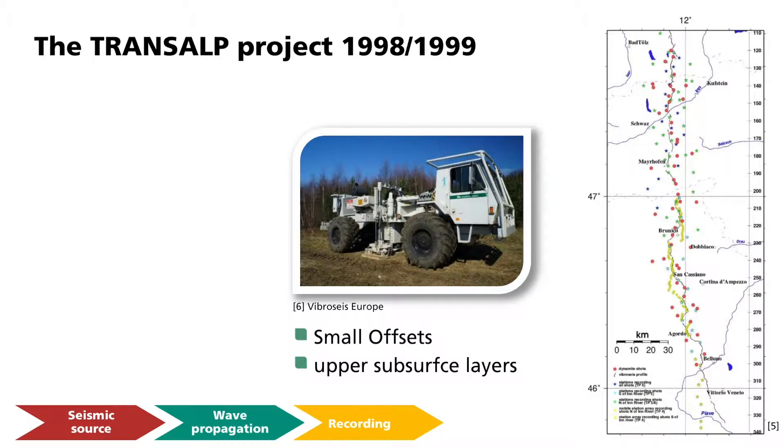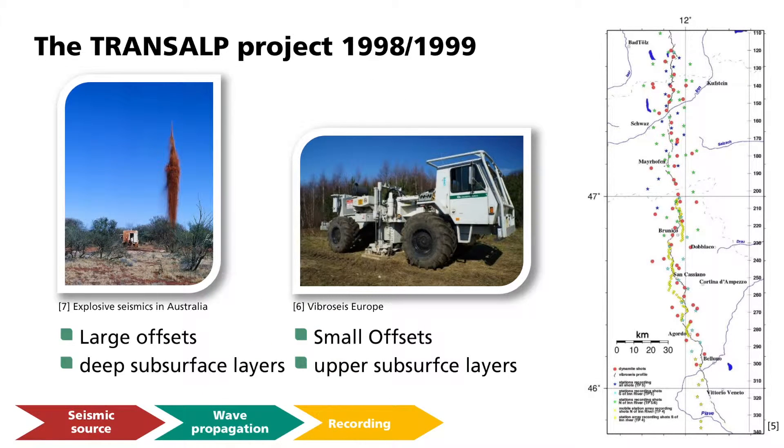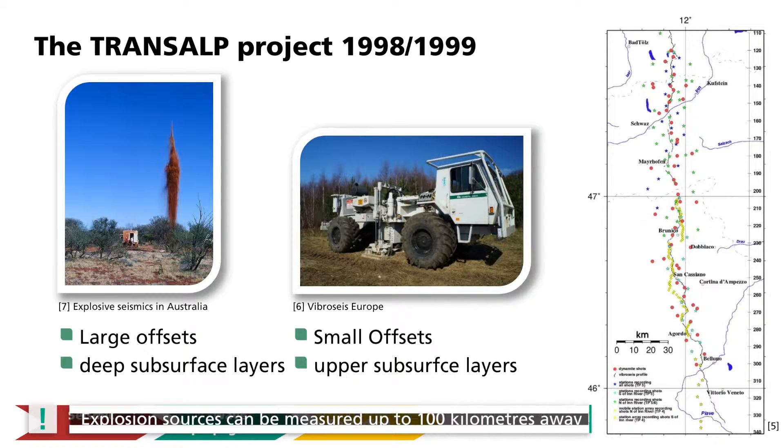Vibroseis emissions are mainly used for measurements with smaller offsets in the upper earth layers. For this purpose, they emit sufficiently strong signals. However, with the large offset distances of wide-angle seismics, stronger explosions must be used as sources to achieve a sufficient signal strength. Then, deeper layers can be investigated, such as the middle and lower crust of the earth. Vibroseis emissions are measurable up to a few tens of kilometers from the source.